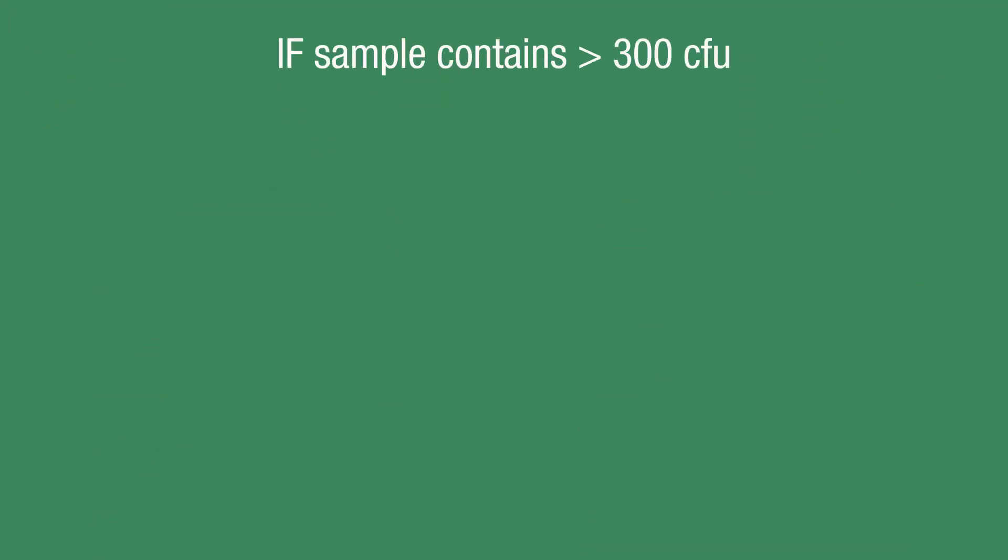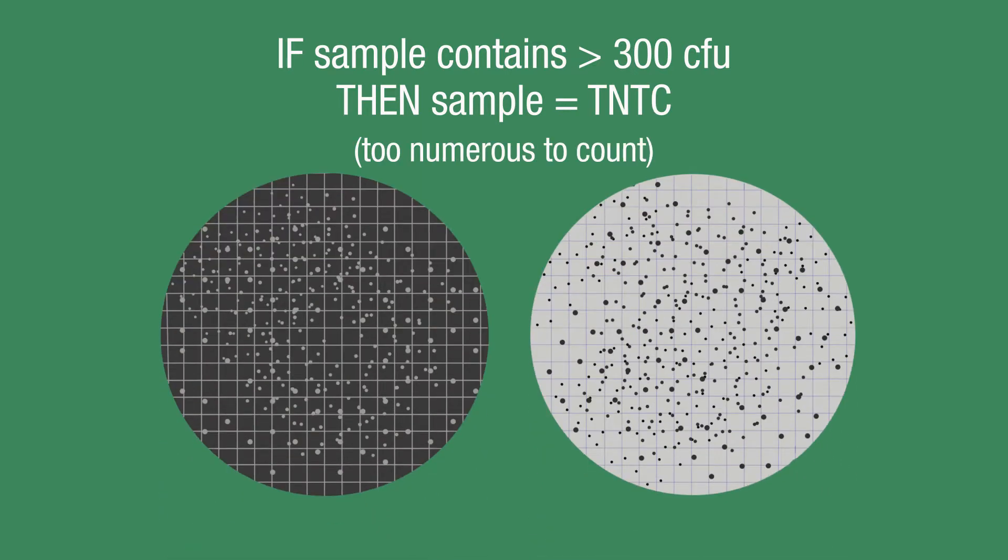Samples containing more than 300 CFU are generally considered to be too numerous to count, or TNTC, due to the inability to differentiate between the high number of colonies that have grown on the filter surface.